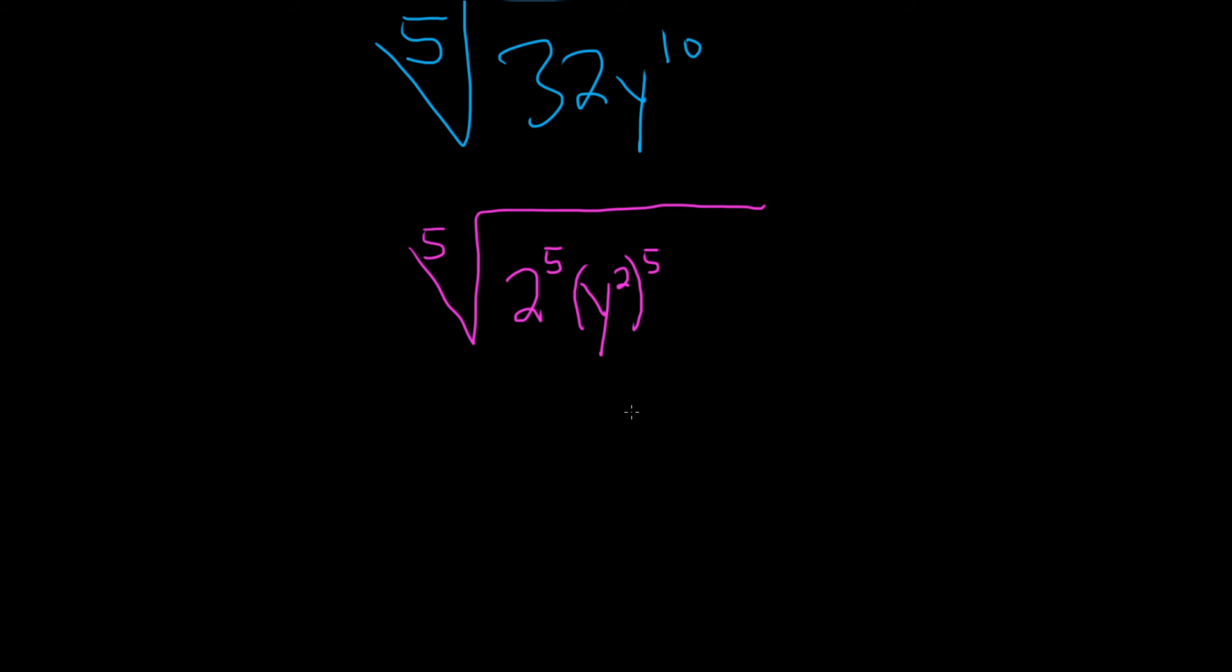Now you just take the fifth root of each piece. So this is the fifth root of 2 to the fifth times the fifth root of y squared to the fifth. And these fives will go away, so you just get 2. These fives go away, so you just get y squared. And that will be the final answer.